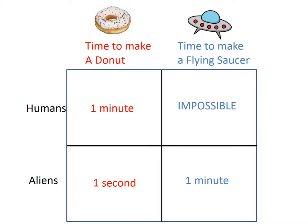This video is going to have a bit of a science fiction theme. Let's imagine that super technologically advanced aliens come to earth and basically ignore us. The aliens care about two things: donuts and flying saucers. The aliens are much better than we are at making donuts — they can make a donut in a second while it takes us a full minute — and they're infinitely better than we are at making flying saucers. We can't do it, and they can make a flying saucer in one minute. Who has a comparative advantage in making which good, and who has an absolute advantage in making which good?